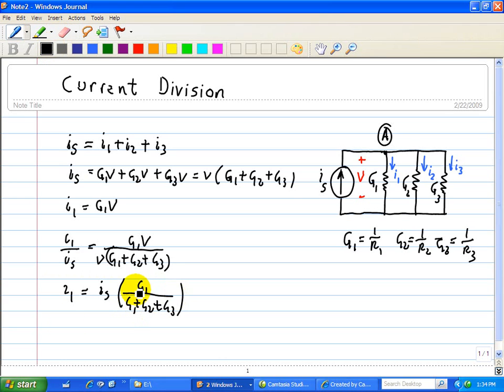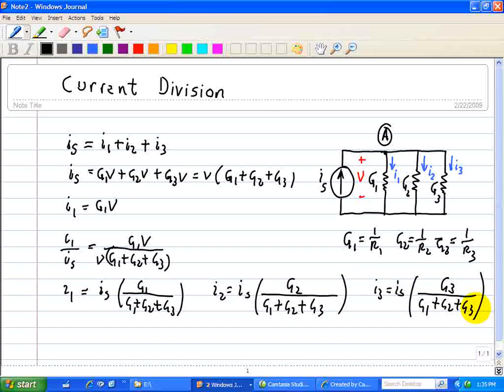And therefore, looking at doing a similar pattern for I2, that must be IS times G2 all over G1 plus G2 plus G3, same with I3, IS is just the conductance of G3 all over the sum of those conductances, G1 plus G2 plus G3. And that's it for the development of the current division formula. And you see it's almost very similar to the voltage division, except we're dealing with currents.